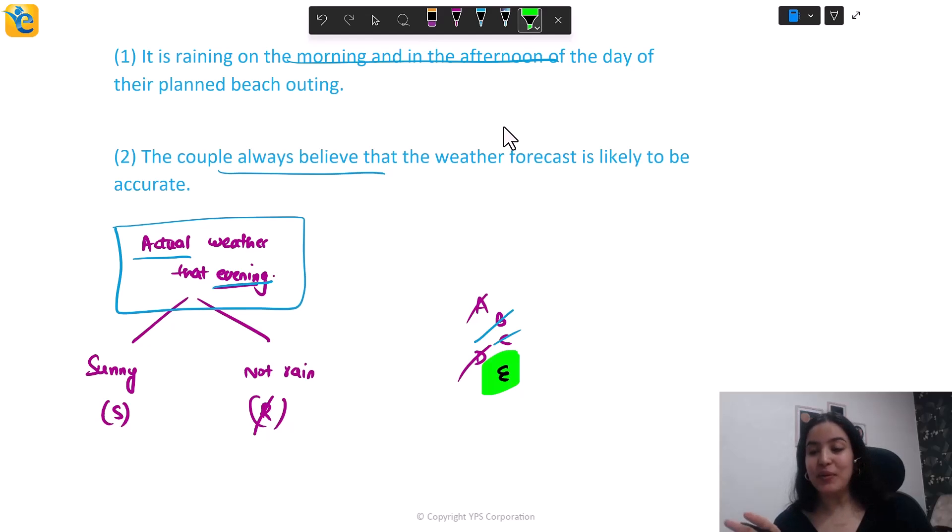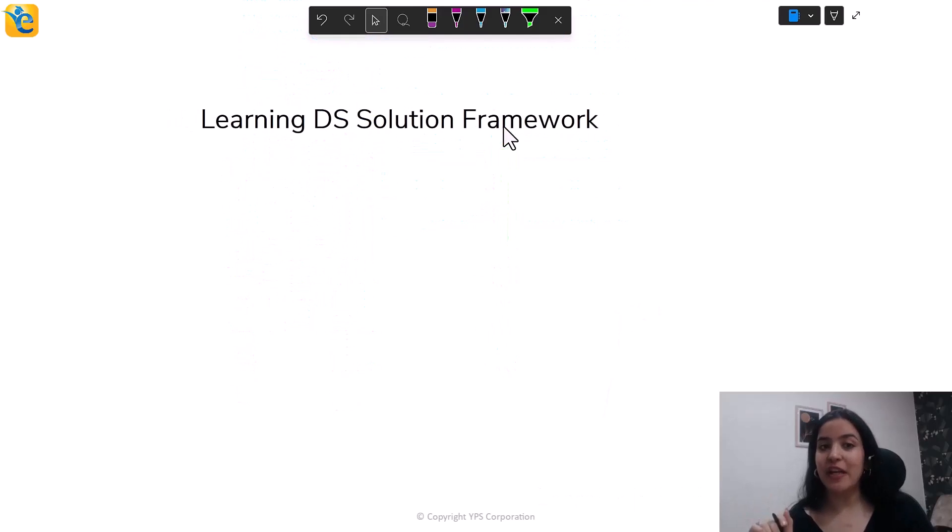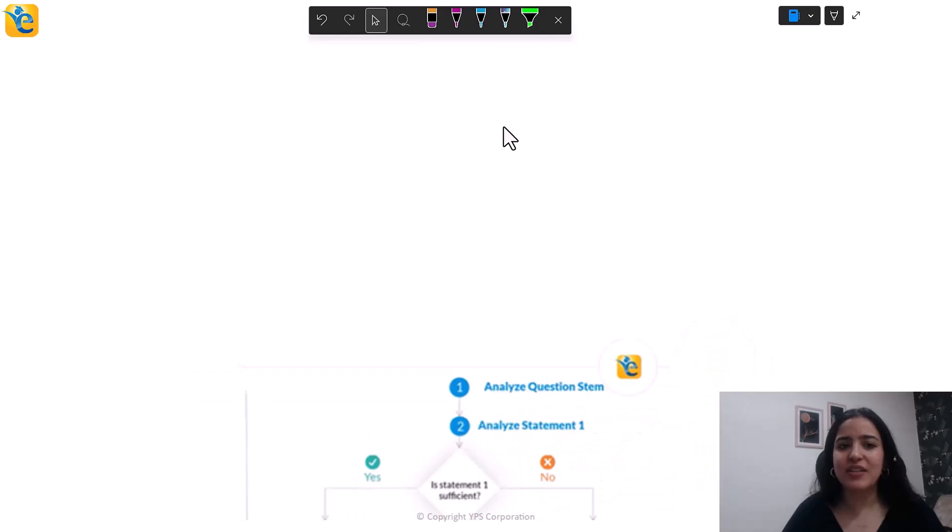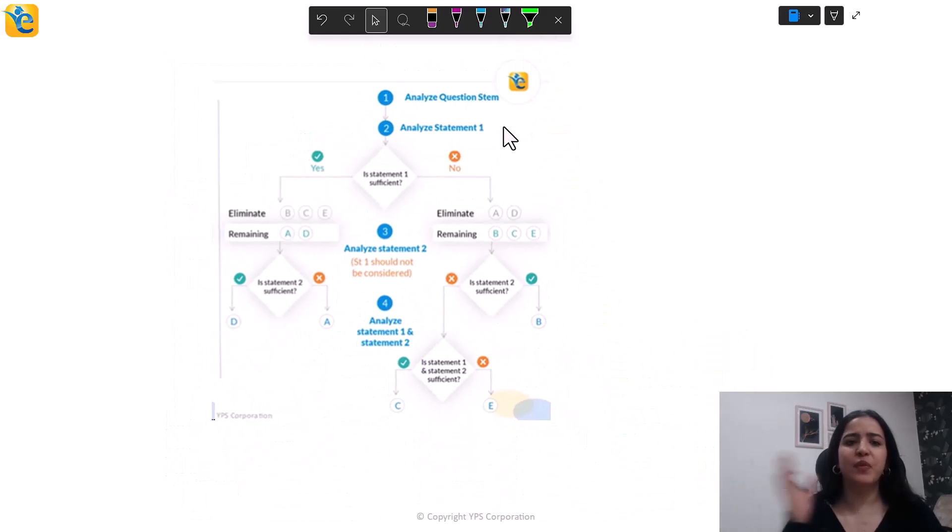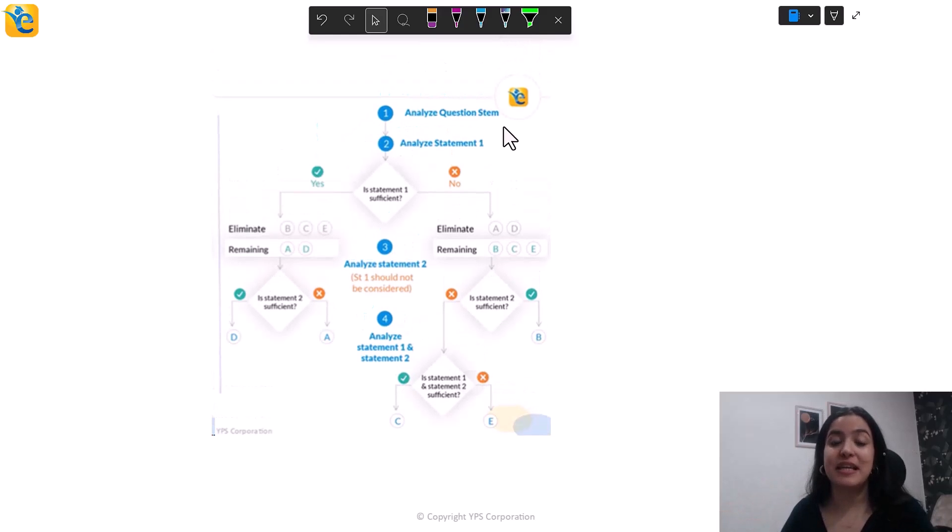Now, one thing you saw here throughout was I was solving this question statement by statement and rejecting choices. For this, you have to know the data sufficiency solution framework. This is something you have to be very clear about. It's a beautiful question type and it requires the application of a robust framework. So the most fundamental skill set required to ace DS questions is mastering the framework in the first place. Now, owing to a very well-defined structure of data sufficiency questions, the process to apply these questions is the same regardless of whether the question is a Quant question or a verbal question. And this is the entire process in flowchart format.